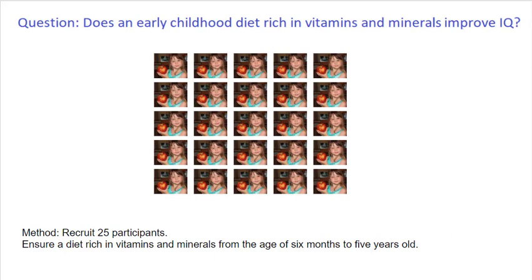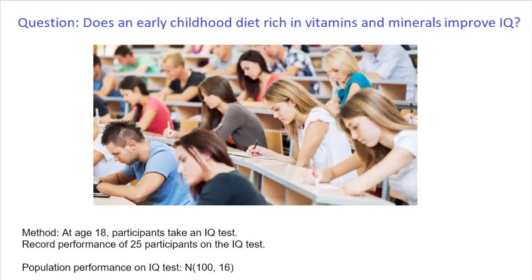For research, we go out there and collect data. In this case, we'll sample 25 people randomly from the population and ensure that they have a diet rich in vitamins and minerals from the age of 6 months to 5 years of age. Then, once they reach 18 years old, we'll give them a standardized IQ test. We know that a standardized IQ test can have a specific mean and standard deviation.